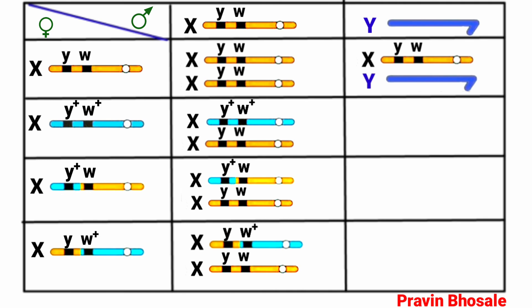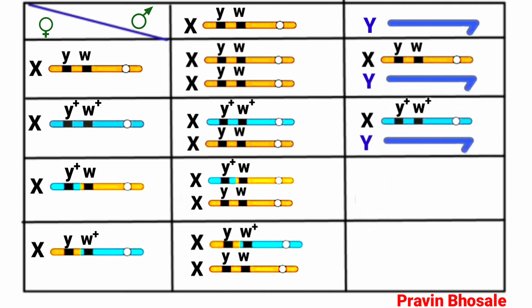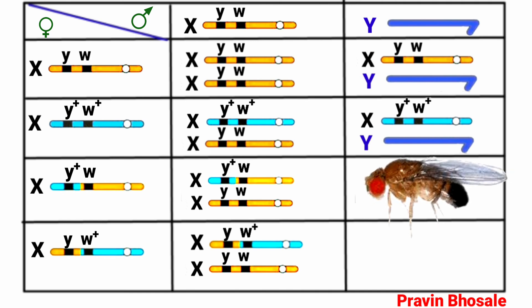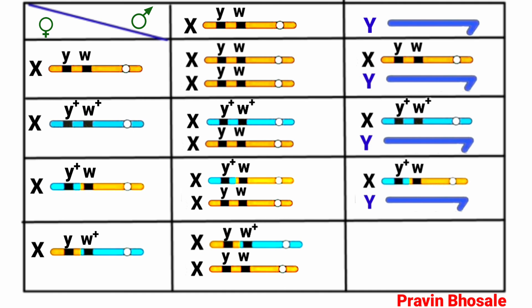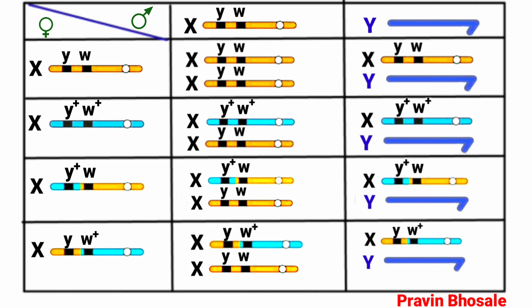Among the male offspring: one XY combination has X carrying small y and small w — yellow body and white eye. Another has X carrying small y and w+ — yellow body and red eye. A third has X carrying y+ and w — brown body and white eye. A fourth has X carrying y+ and w+ — but wait, here X carries small y and w+ — yellow body and red eye. The Y chromosome carries no body or eye color genes in any case.